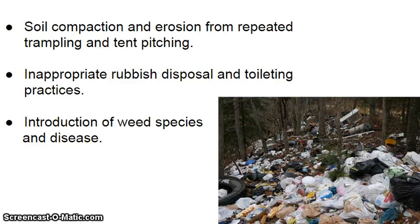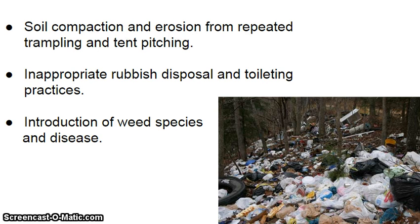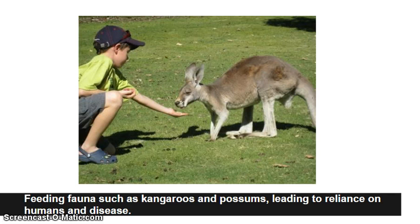Other things to consider include soil compaction and erosion from repeated trampling and tent pitching, rubbish disposal, and inappropriate toileting practices — remembering that toileting needs to be at least 150 metres from water. We take out what we take in, in terms of rubbish. There's also the introduction of weed species and the spreading of seed, and the issue of people feeding animals such as kangaroos and possums, which leads to these animals relying on human intervention.